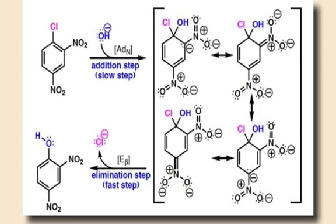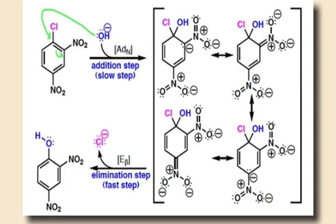The first step in the nucleophilic aromatic substitution mechanism is nucleophilic attack on the electron-deficient ring at the carbon bearing the leaving group. This nucleophilic addition step creates the resonance-stabilized carbanion intermediate prior to elimination of the chlorine. Notice the position of the two nitro groups — they are at the ortho and para positions, and this is important for the reaction to occur.